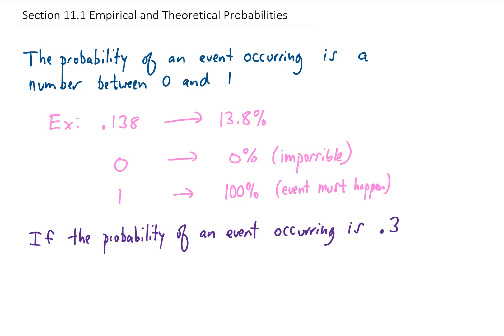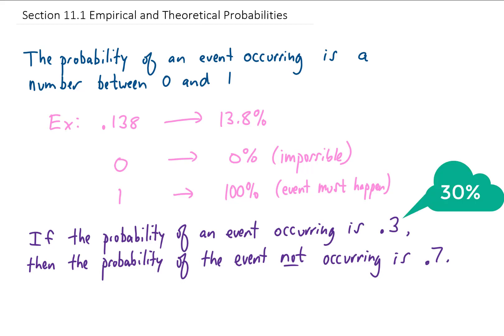Our next note is that if the probability of an event occurring is, say for example, 0.3, then the probability of the event not occurring is 0.7. This fact makes more sense if we consider that 0.3 means a 30% chance of happening, then the probability that it doesn't happen is 70%, which is given by a 0.7 probability. To say this more mathematically, the probability of an event occurring plus the probability that it doesn't occur has to add up to 1. The probability of event A plus the probability of A not happening has to add up to 1.